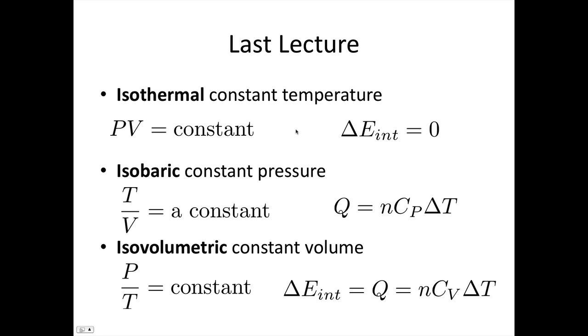Next, we looked at what isobaric means. This just means constant pressure. So an example of something happening at constant pressure is anything that happens at atmospheric pressure. So any process that you carry out which is open to the atmosphere, so that that pressure is always in equilibrium with atmospheric pressure, is isobaric. And the ideal gas law tells us that in this case, T on V is constant. And we saw that the heat added in this case is given by nC_P delta T, where C_P is that molar specific heat at constant pressure.